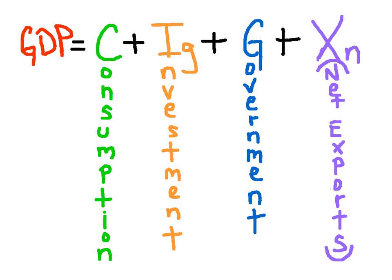We can add up an economy's income for the year, such as wages, rents, interests, and profits. Or we can just add up all of the expenditures of a given year.